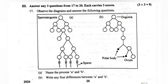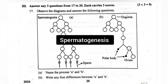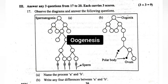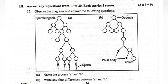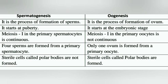17. Observe the diagrams and answer the following questions. A. Name the processes A and B. Answer: A — Spermatogenesis; B — Oogenesis. B. Write four differences between A and B. Spermatogenesis: process of formation of sperms; starts at puberty; meiosis I in primary spermatocyte is continuous; four sperms are formed from a primary spermatocyte; polar bodies are not formed. Oogenesis: process of formation of ovum; starts at embryonic stage; meiosis I in primary oocyte is not continuous; only one ovum is formed from a primary oocyte; sterile cells called polar bodies are formed.